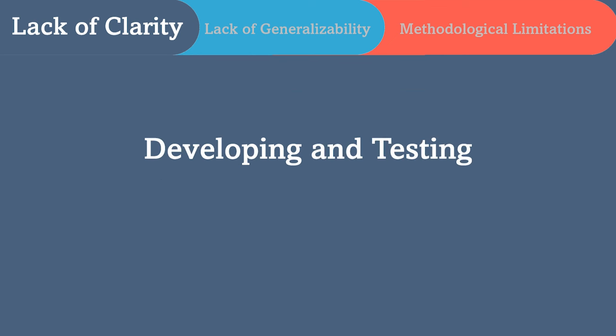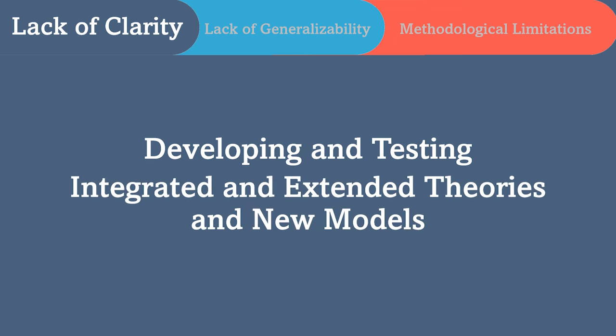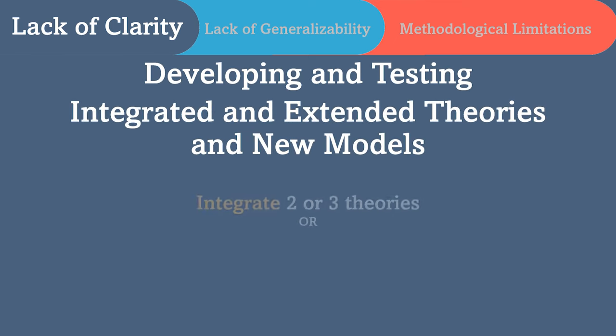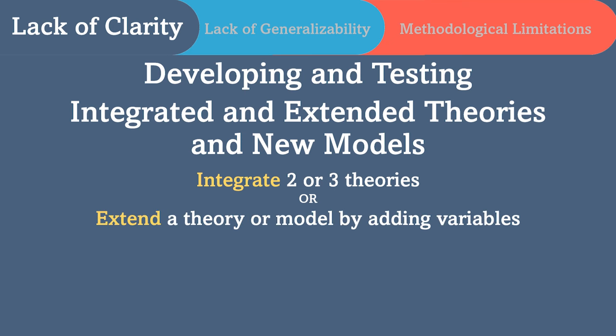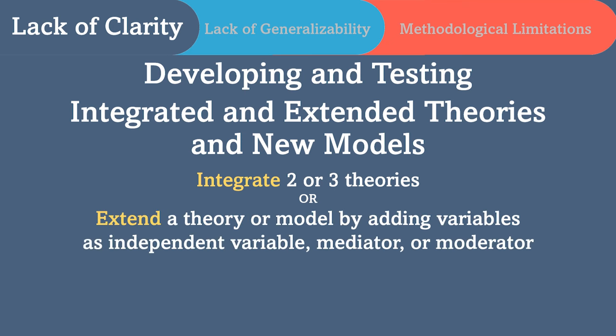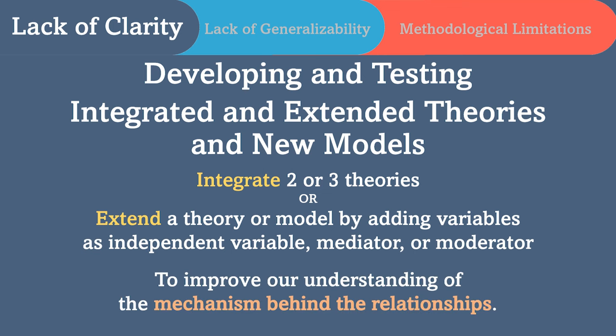The second form of lack of clarity is developing and testing a research model that you have developed. For example, you could integrate two or three theories, or extend a theory or model by adding more variables as independent variables, mediators, or moderators to improve our understanding of the concept or the mechanism behind the relationships. In other words, you aim to provide more clarity and further explanation regarding a concept or set of relationships.